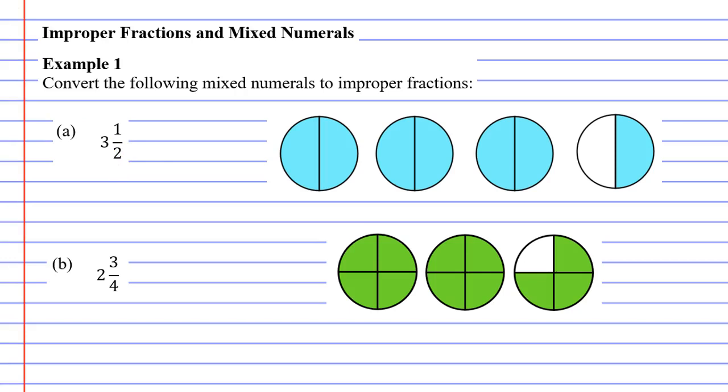If I wanted to convert this to an improper fraction what I could do is say all right each circle has been cut into two pieces. That means that my denominator must be two.